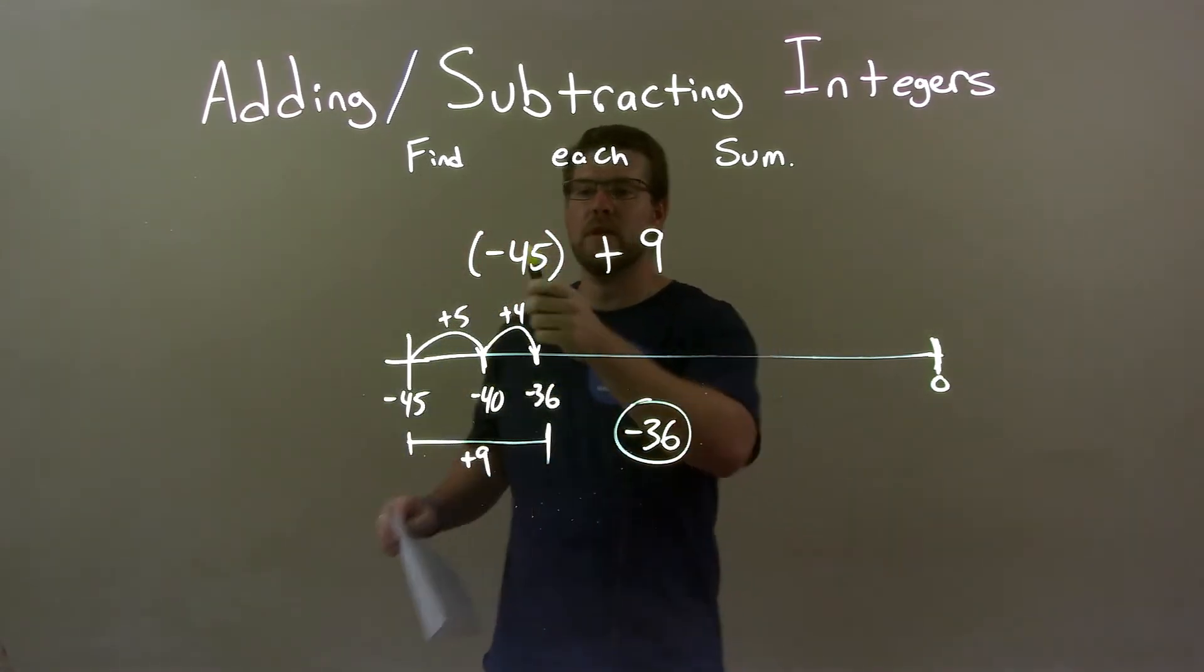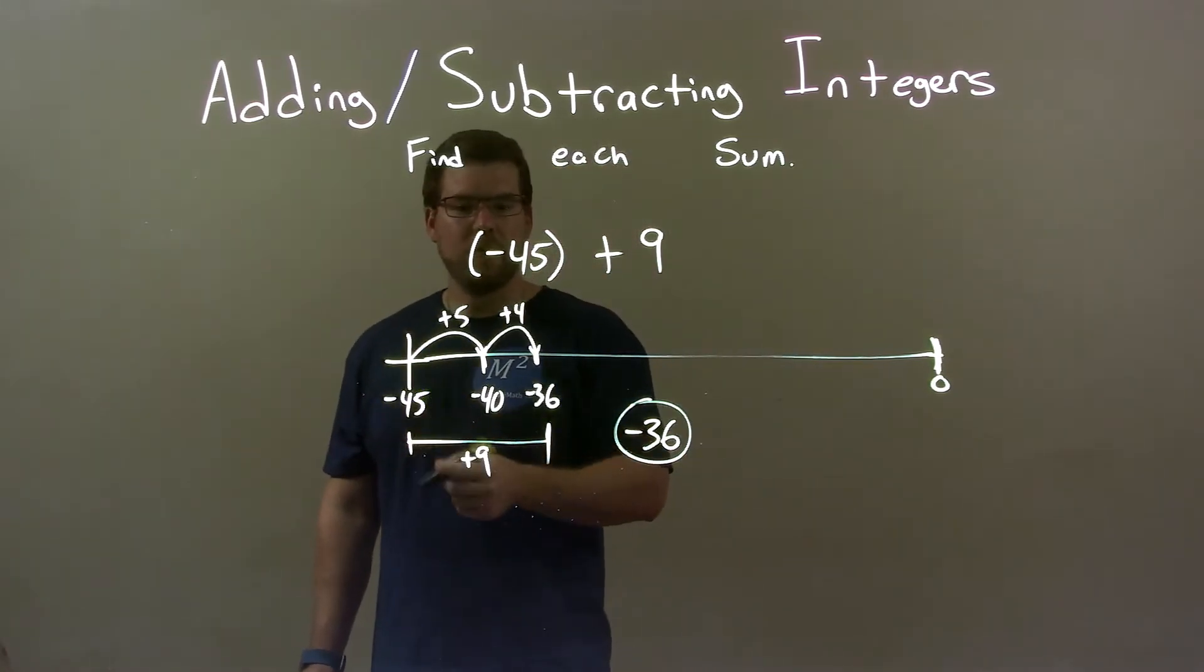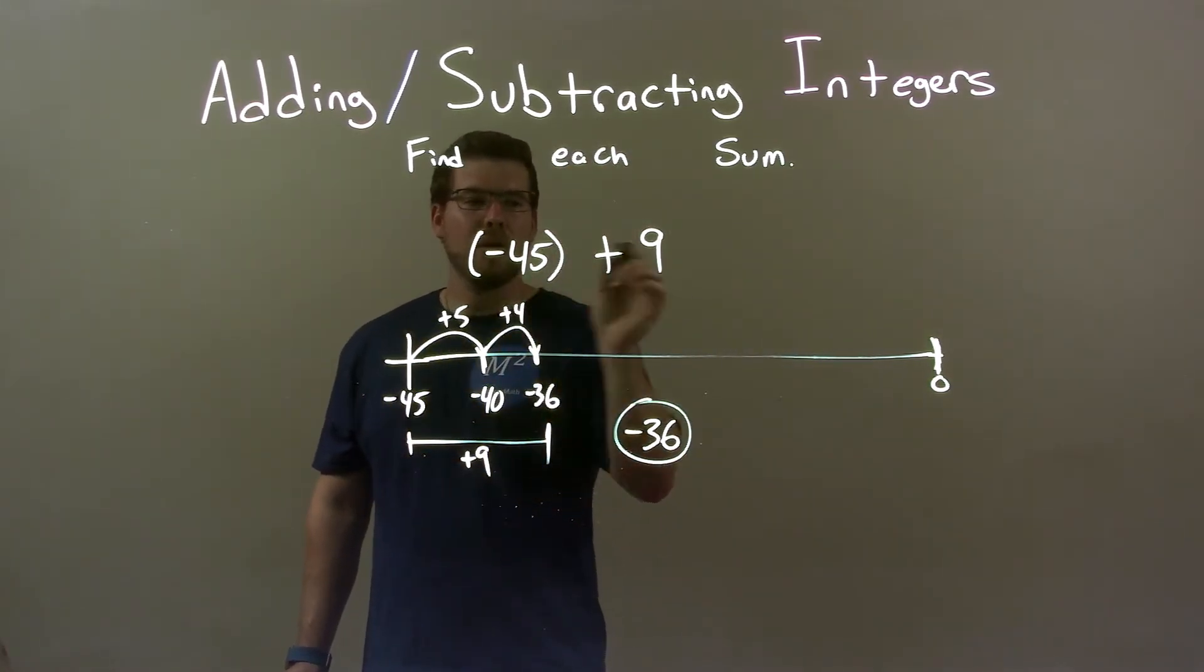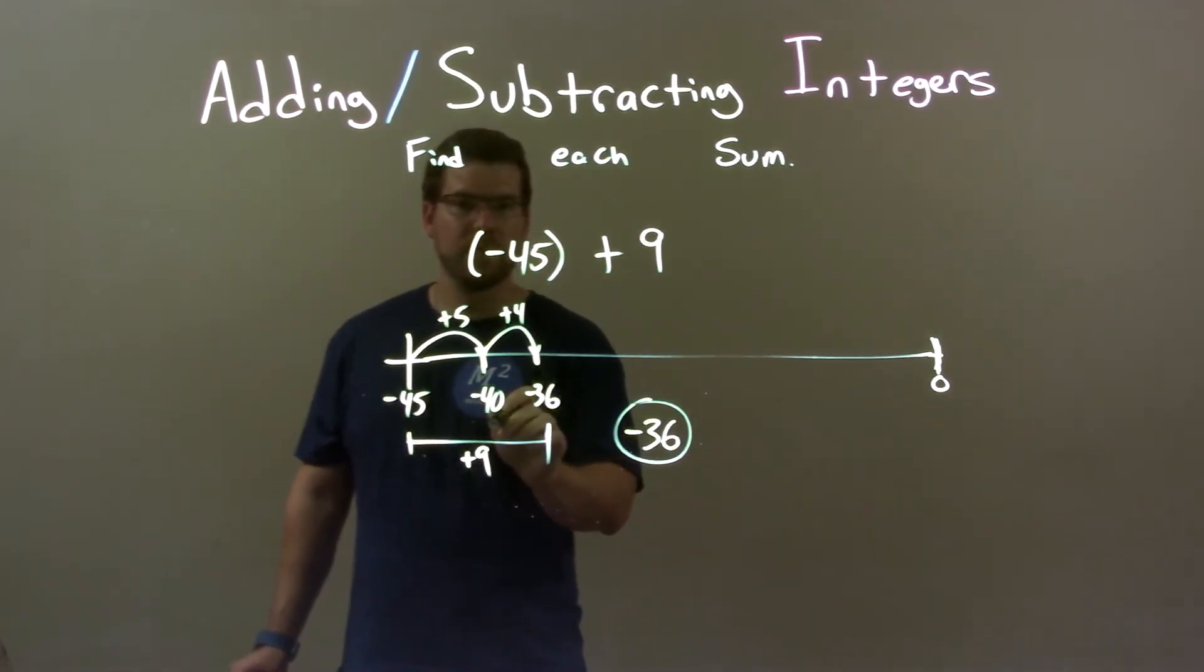So, quick recap. We're given negative 45 plus 9 and we need to add them. We start with negative 45, and I wrote 9 to be 5 plus 4. Well, 5 units gave me negative 40, and then negative 40 plus 4 is negative 36.